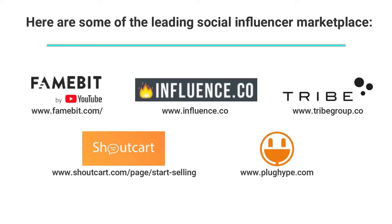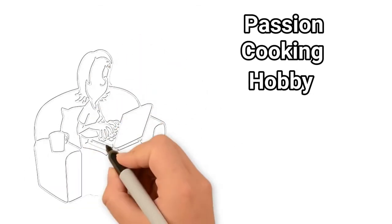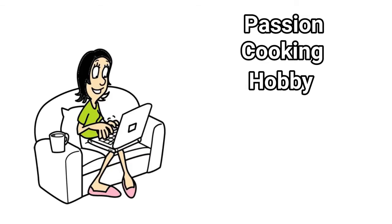Number six: start a blog. Blogging on your passion, cooking, or hobby is another great way to monetize from advertisers, affiliate programs, and sponsorships.